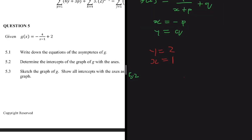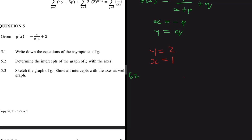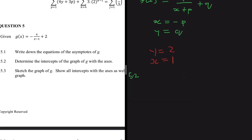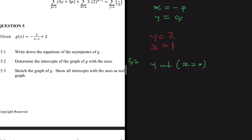Question 5.2 asks us to determine the intercepts of the graph of g with the axes. We have two intercepts: the y-intercept and the x-intercept. For the y-intercept, we know that x equals 0. So we take our equation g(x), let x equal 0, and solve for y.